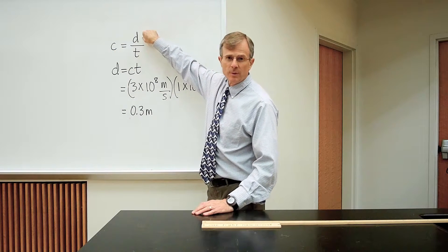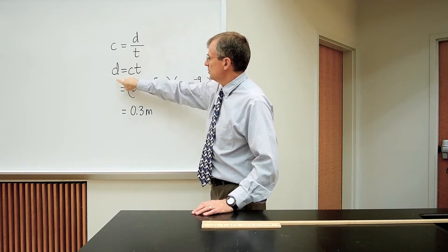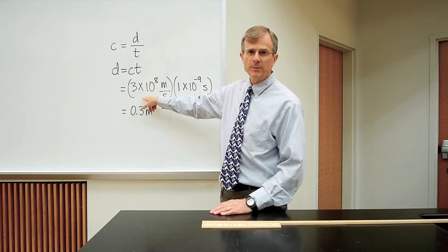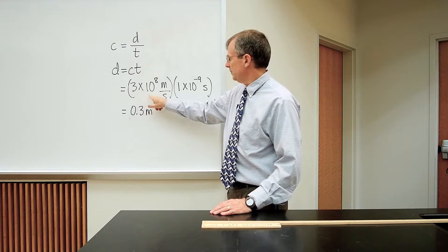If you solve this equation for the distance, the distance will be the speed times the time. The speed of light is approximately 3 times 10 to the 8 meters per second.